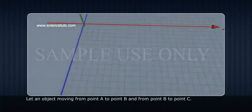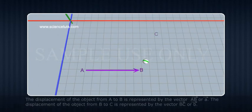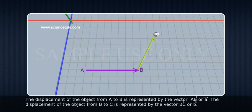Let an object move from point A to point B and from point B to point C. The displacement of the object from A to B is represented by the vector AB or vector A.